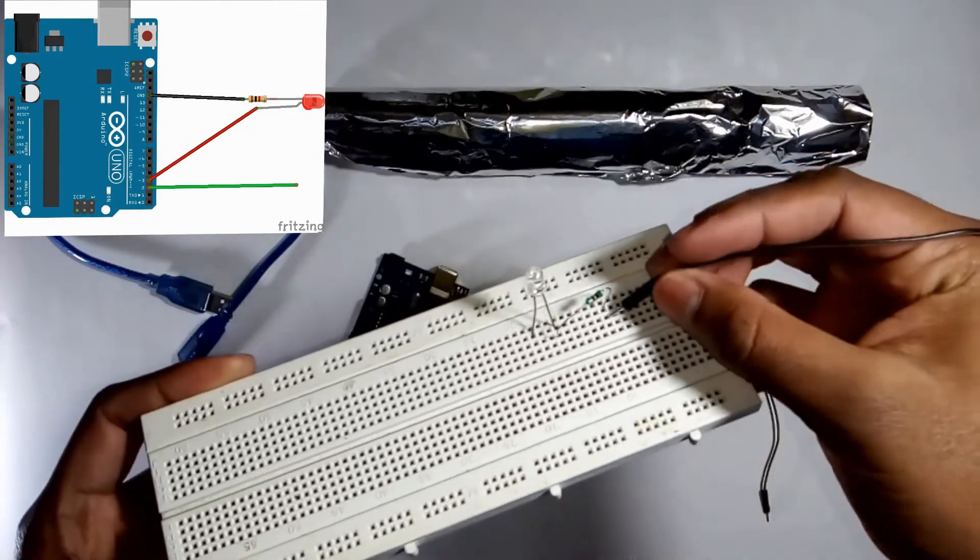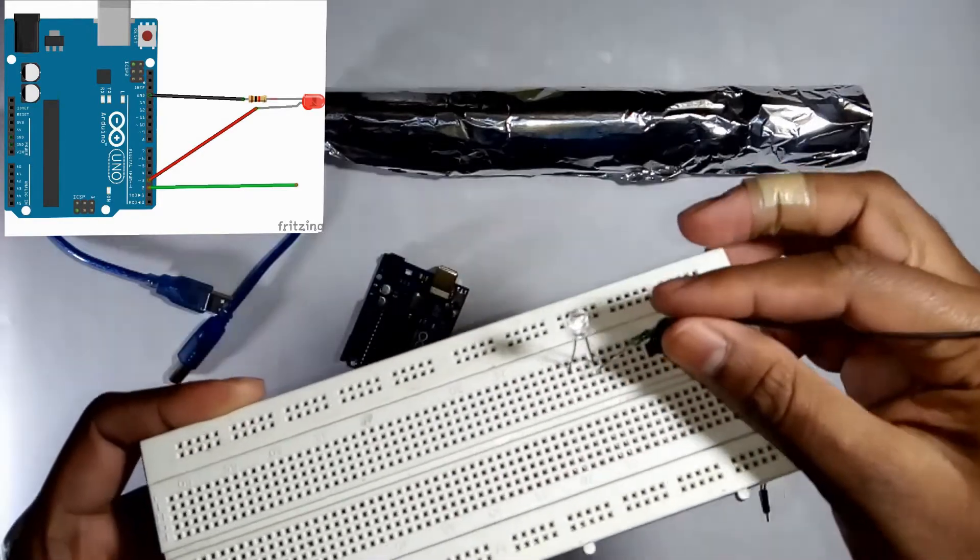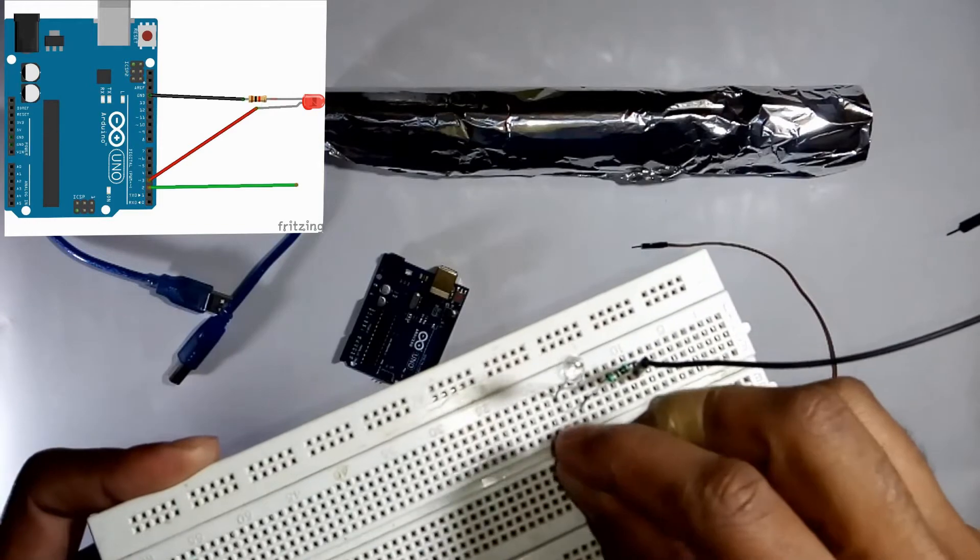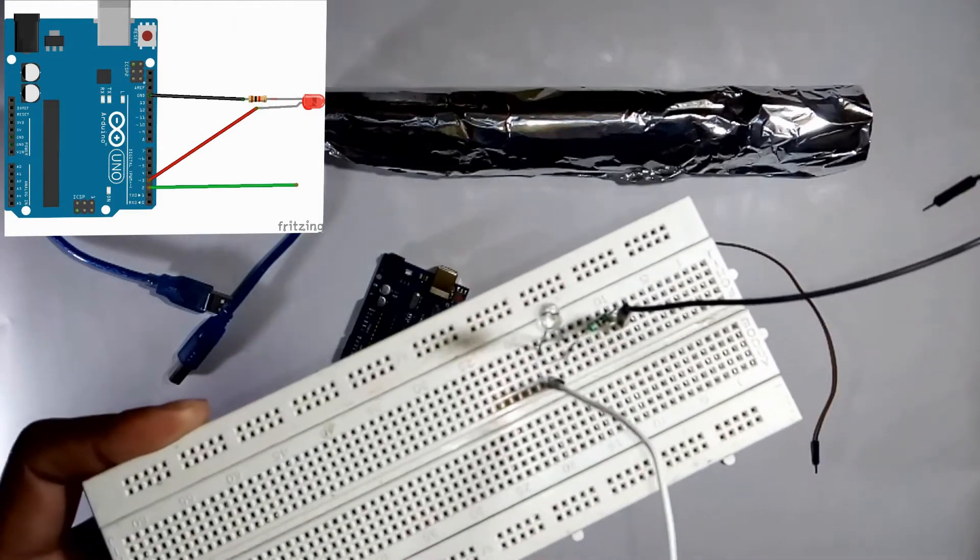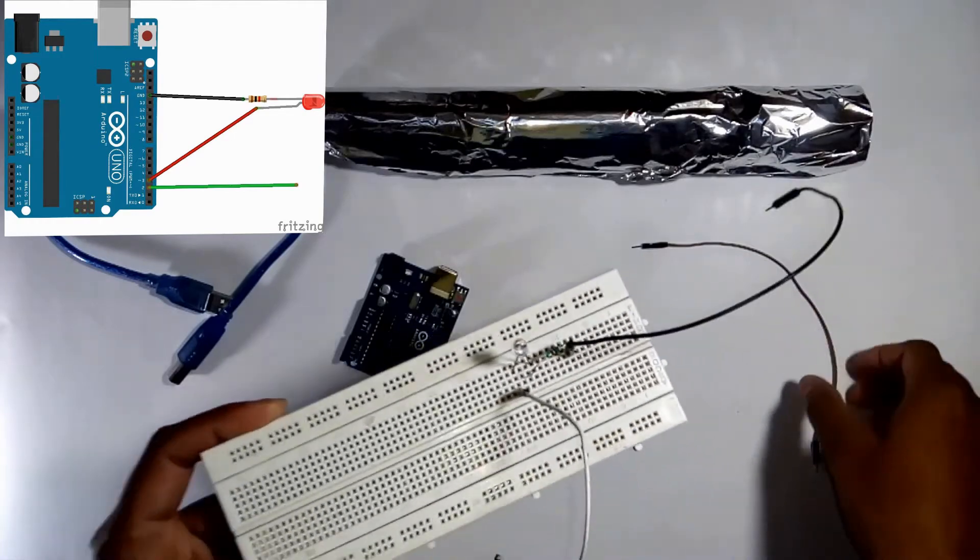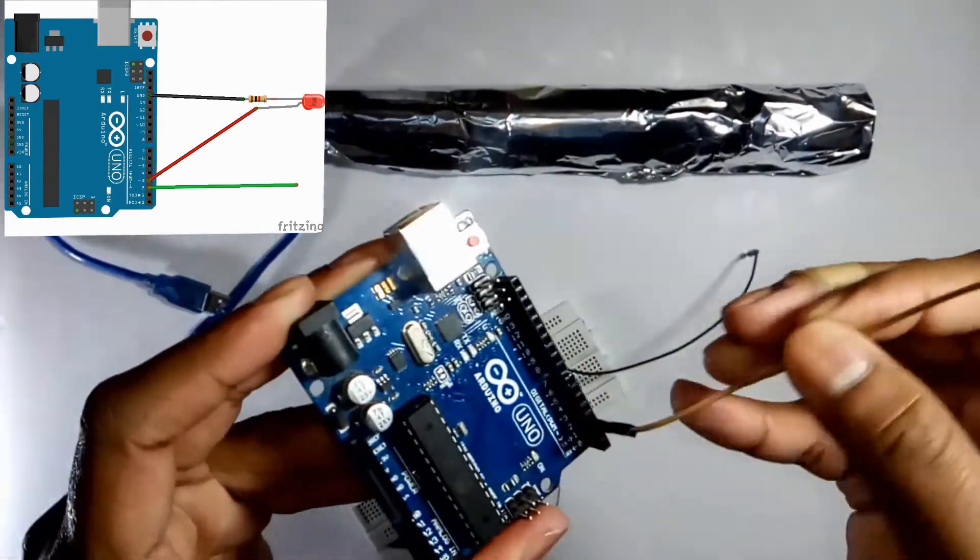And take a jumper wire which connects at the end of the resistance. Okay, I'm connected. And take another jumper wire which connects to the positive terminal of the LED. Here you see I connected it. Take an Arduino board and connect a wire with pin number 2.